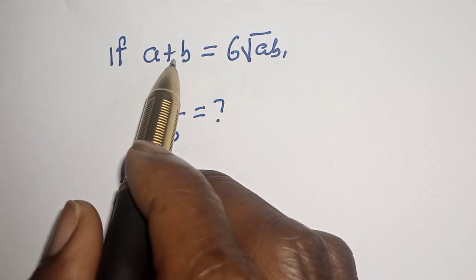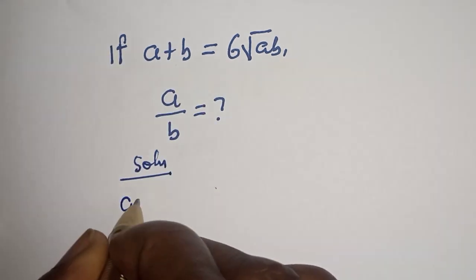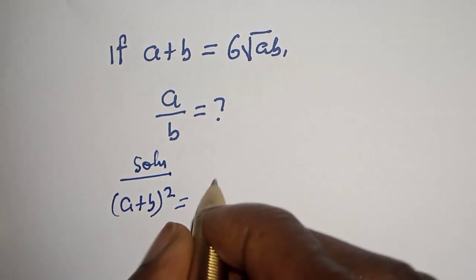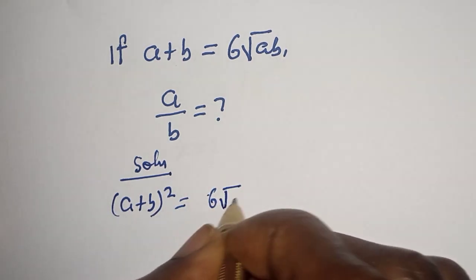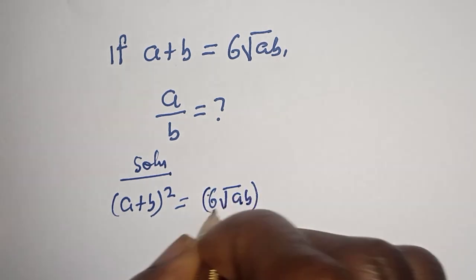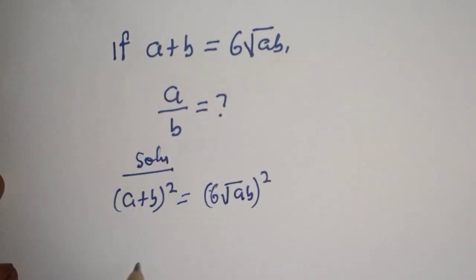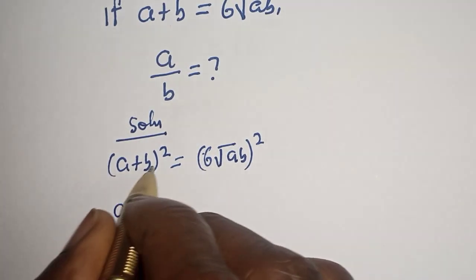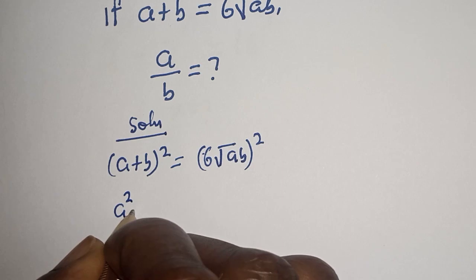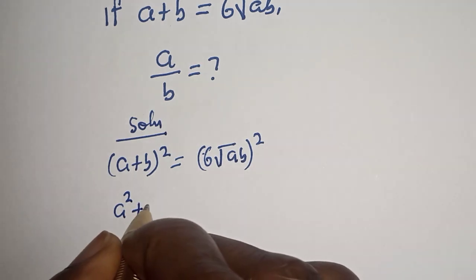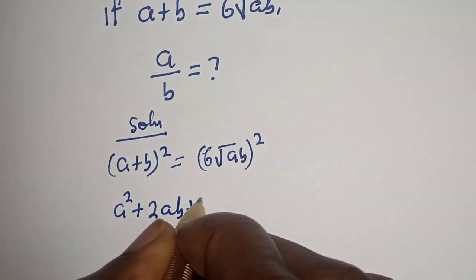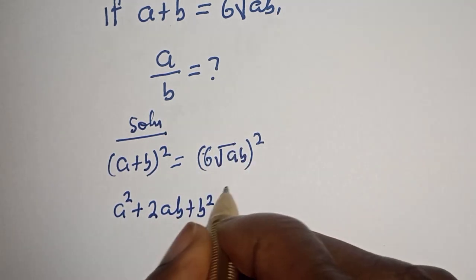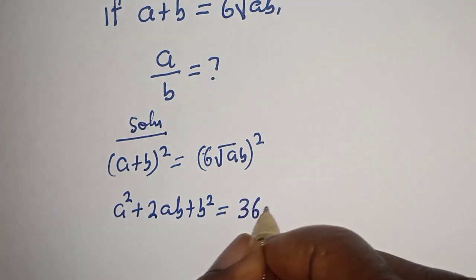Let's square both sides of this equation. A plus B squared is equal to the sixth root of AB, squared. If you expand this, A plus B squared is A squared plus 2AB plus B squared, which is equal to 36AB.